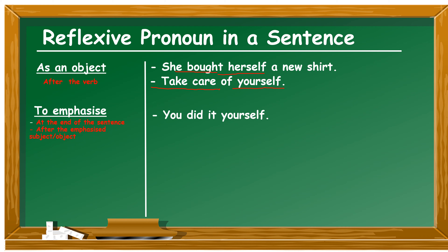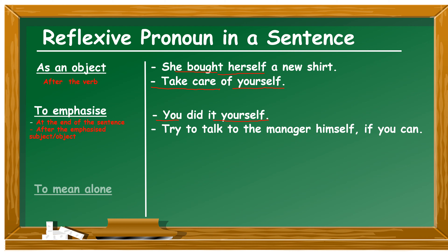When used for emphasis, the reflexive pronoun comes either at the very end of the sentence or right after the emphasized subject or object. For instance, 'you did it yourself' — the reflexive pronoun emphasizes the subject 'you' and comes at the very end. Another example: 'try to talk to the manager himself if you can' — the reflexive pronoun emphasizes the object 'manager' and comes right after it.